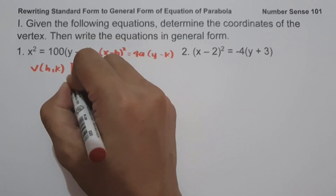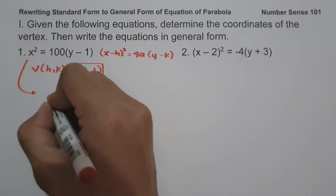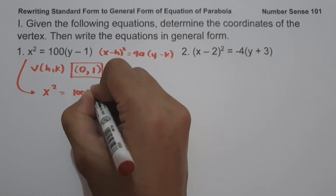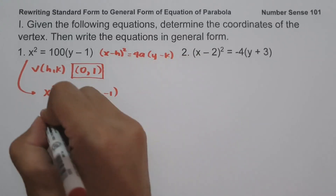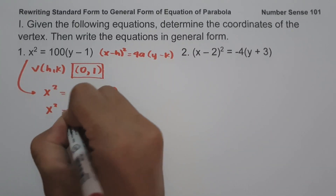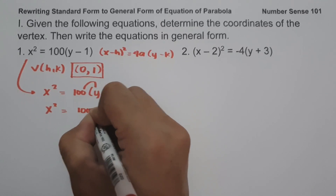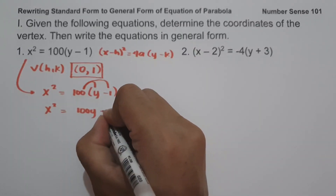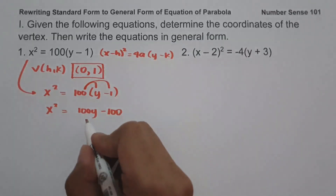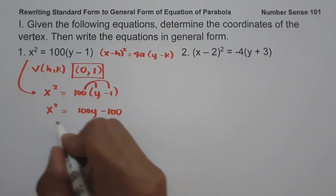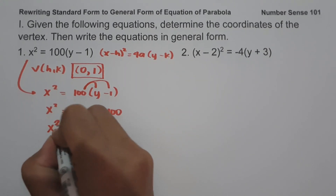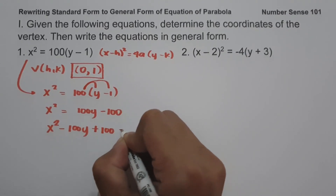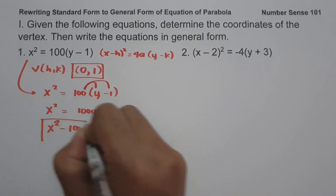So this will be our vertex. To write this into general form, we have x² = 100(y − 1). Expanding: 100 multiplied by y is 100y, and 100 multiplied by negative 1 is negative 100. Moving 100y and negative 100 to the side of x squared, we get x² − 100y + 100 = 0. And this will be our answer.